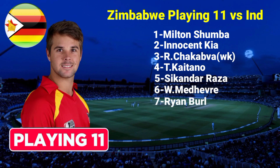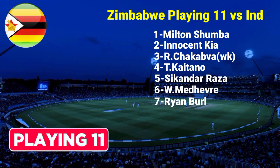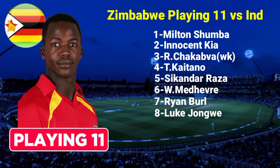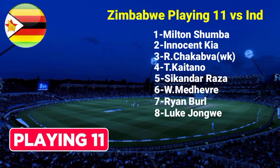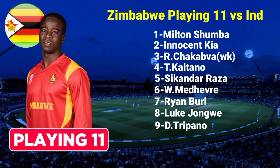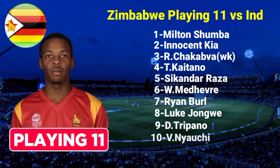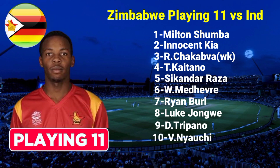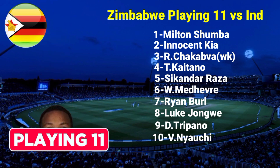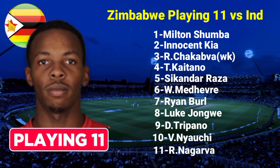No.7 Ryan Burl, All Rounder. No.8 Luke Jongwe, Right Arm Fast Bowler. No.9 Donald Tiripano, Right Arm Fast Bowler. No.10 Victor Nyauchi, Right Arm Fast Bowler. No.11 Richard Ngarava, Right Arm Fast Bowler.